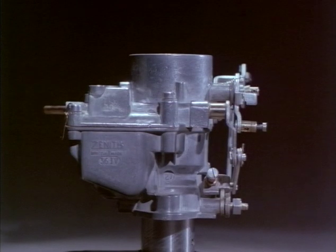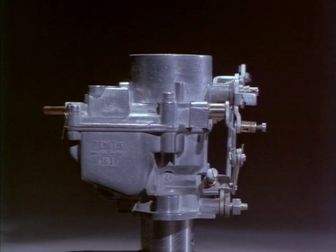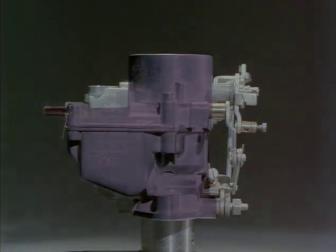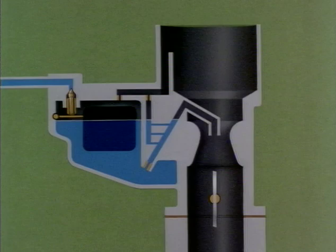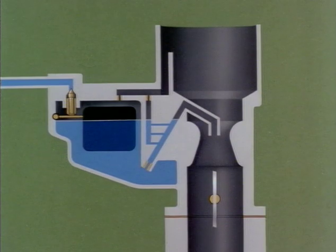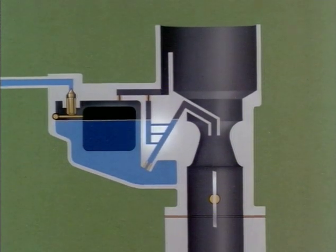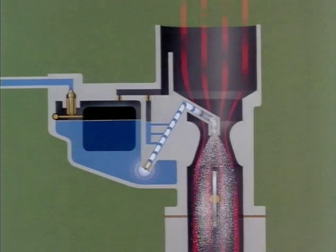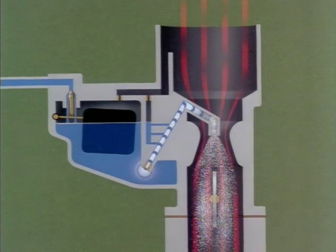This is done by an air bleed, which restricts the amount of fuel reaching the engine by mixing in more air to maintain the correct mixture. The air bleed consists of special channels within the carburettor, and the flow of fuel through the main jet draws in the additional air.